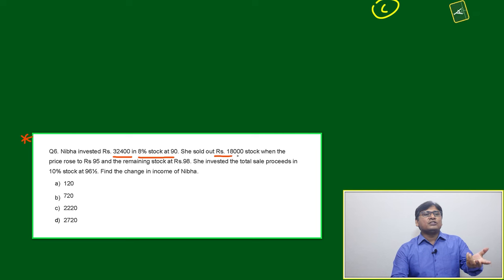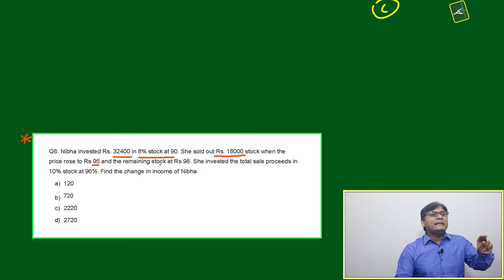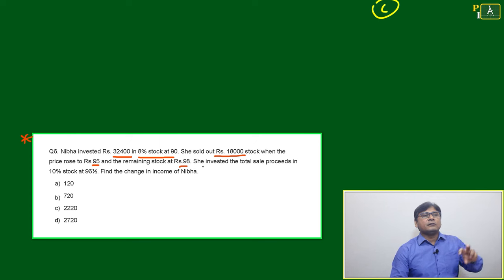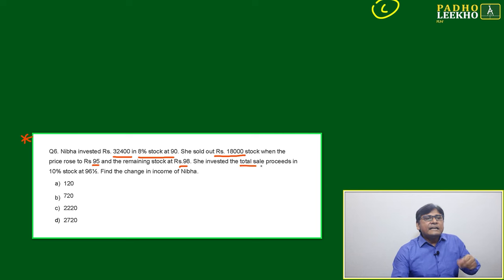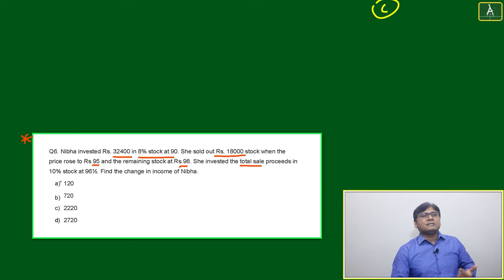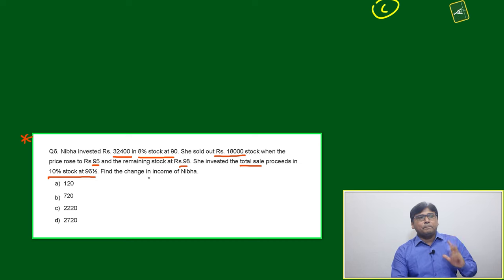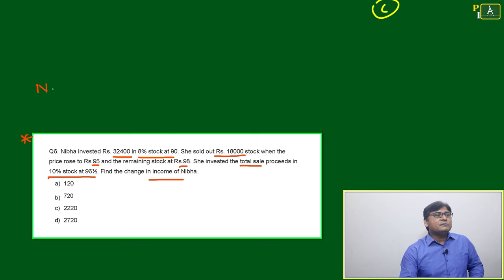She sold rupees 18,000 stock value when the price rose to 95, and the remaining stock at 98. After selling both at different prices — 18,000 at 95 and remaining at 98 — she invested the total sale proceeds in 10% stock at 96.5. Find the change in income of Niva.